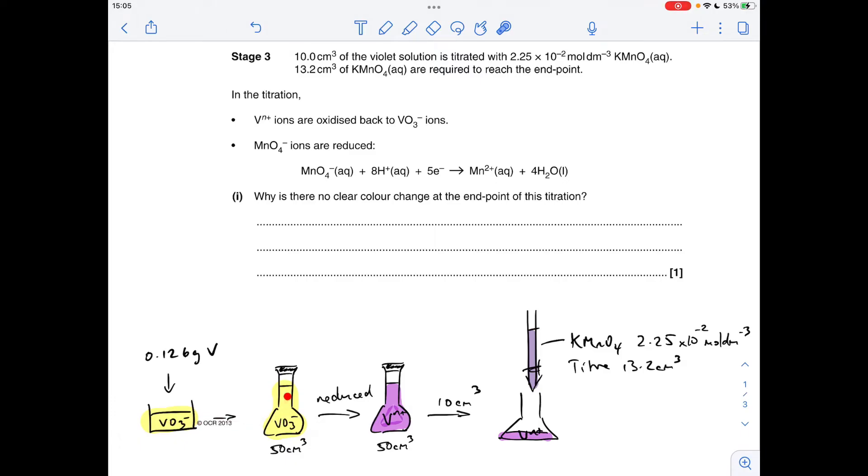That's then gone into a volumetric flask and made up to 50cm³. It's then been reduced and turned into Vⁿ⁺. Obviously the calculation coming up requires us to work out what that N is. But significantly, the colour has changed to violet. Still got 50cm³, but it's now in this violet Vⁿ⁺.